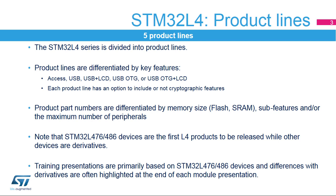The STM32L4 Series is divided into product lines differentiated by key features. The product part numbers are differentiated by memory size, sub-features, and/or the maximum number of peripherals as described in the following slides.